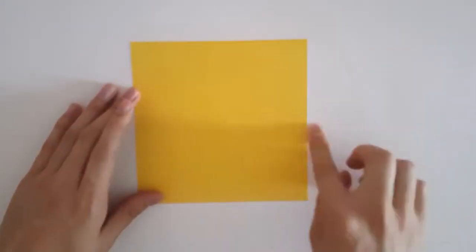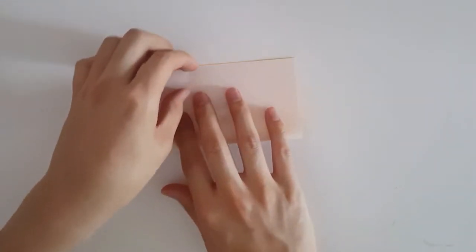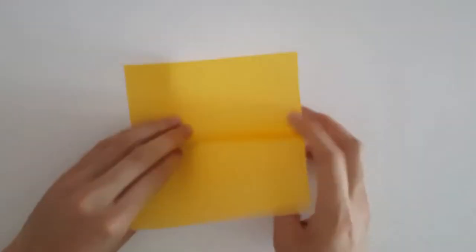So firstly we just want to start off with a square piece of paper, and having the color of the side facing up, we'll fold it horizontally and vertically, and we're just going to unfold both of these.